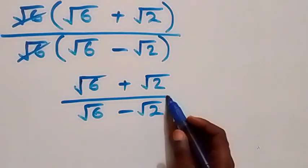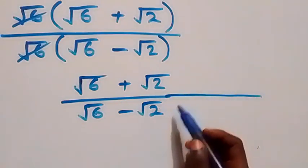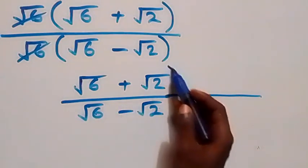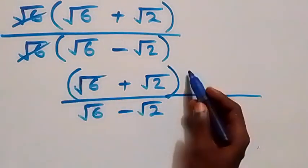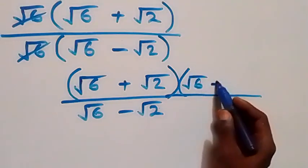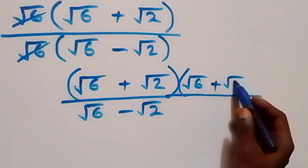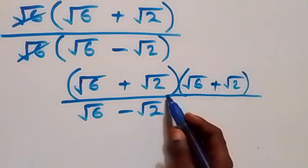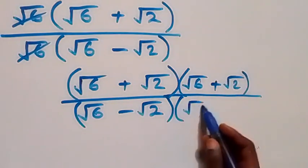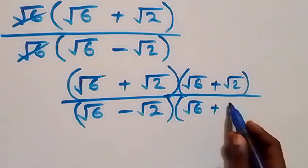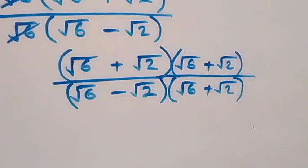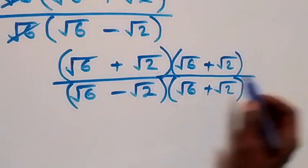From here we rationalize this expression. We multiply both the numerator and denominator by the conjugate of the denominator, which is (root 6 plus root 2).